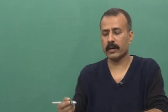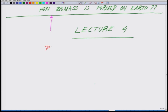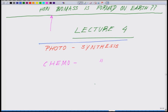Let us start this topic with two terminologies and how they lead to the formation of biomass and the whole global spectrum of things. Our central question for Lecture 4 is: how is biomass formed on the planet Earth? The two processes are photosynthesis and chemosynthesis.